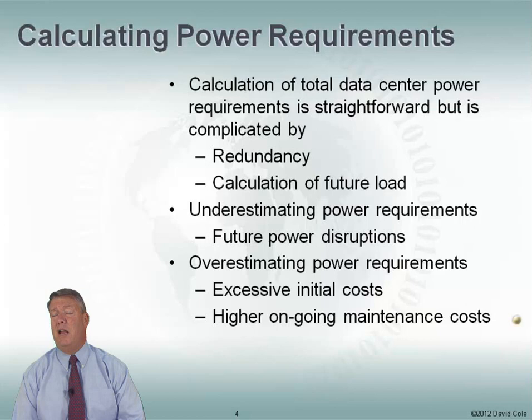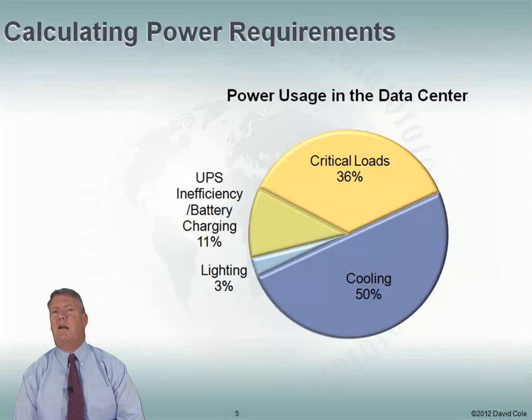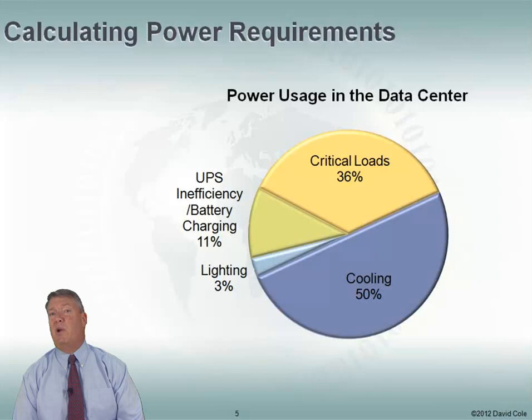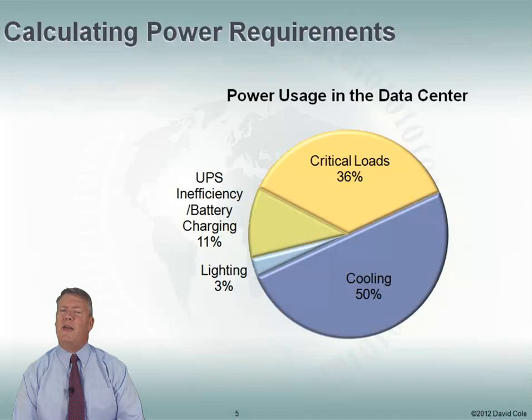Where is our power going in the data center? As much as half of it can go to cooling. We're going to talk quite a bit more about cooling and ways we can be more efficient, but cooling is often half the power in the data center. Then we have our critical loads, which can be a third or closer to a half. We also have UPS inefficiency when charging our UPS batteries, which can be quite a bit of our overall power usage. And then there's lighting.